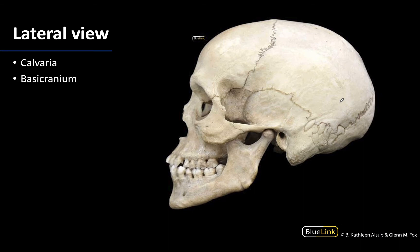First I want to get started with some basic terminology that you will hear us use quite often: calvaria and basicranium. Looking at a lateral view of the skull — the term skull means the cranium, which is everything except the mandible. The mandible is the lower jaw, so when you have the mandible included with the rest of the cranium then you are looking at the skull. The cranium is composed of the facial region — all these facial bones here.